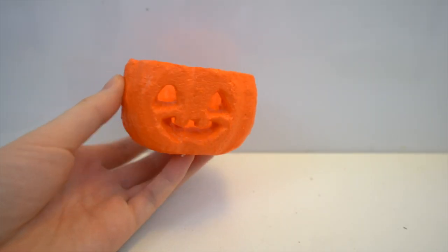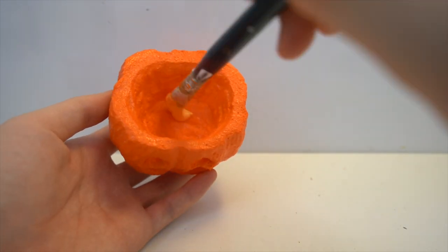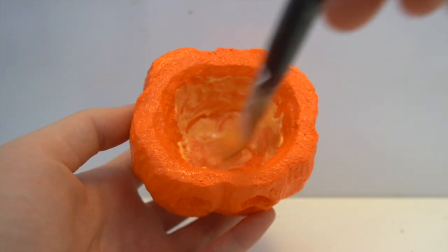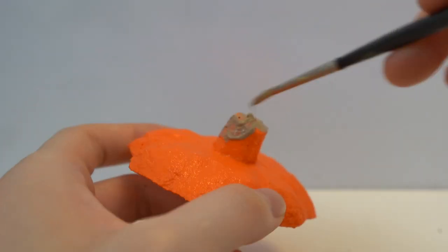After I was finished painting this I realized that the inside of the pumpkin is actually a lighter color so I had to go back and paint that. Don't forget to also paint the stem.